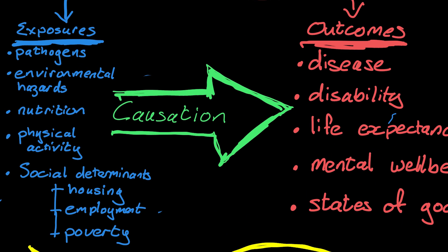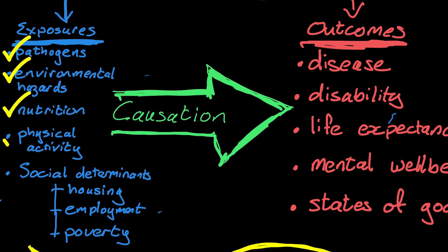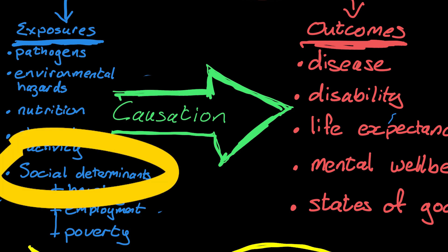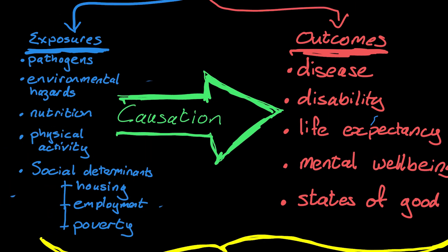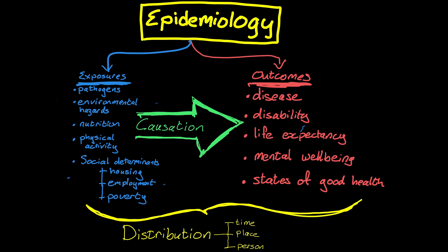What do we mean by outcomes and exposures? Exposures are anything that can impact on the health status of a person or population — for better or for worse. So pathogens, environmental hazards, nutrition, physical activity — physical activity is a good example of something that translates into a better health outcome. It could be drugs, medicines, public health interventions, social determinants of health like housing, employment, poverty, et cetera. All of these are exposures — things that people are exposed to.